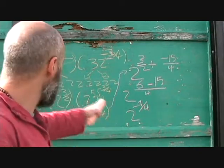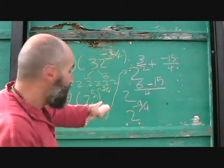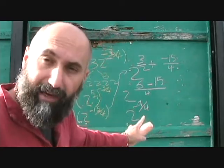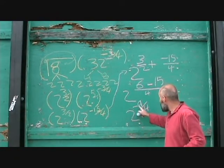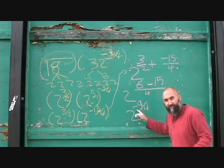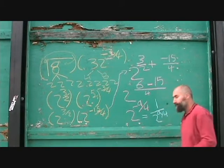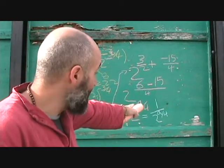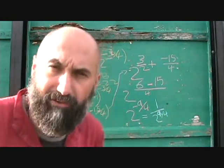So the answer to the original question — the square root of 8 times 32 to the power of negative 3 over 4 — is 2 to the power of negative 9 over 4. Sometimes questions ask for positive powers only. The negative power here doesn't flip this expression — some people make that mistake. It operates on the base number, so the alternate answer would be 1 over 2 to the power of 9 over 4.